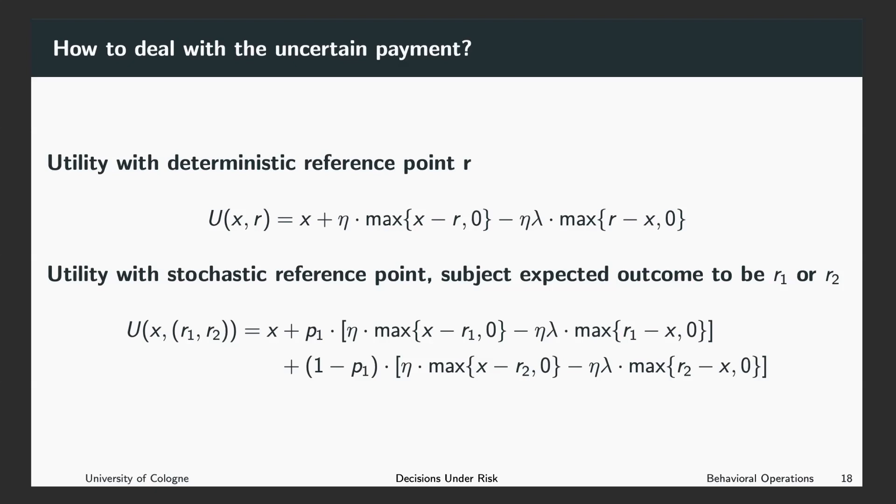And if you are worse off than your reference point, which means r is larger than x, then you have a negative psychological utility of the amount of η times λ times the difference between your reference point and your actual payment.